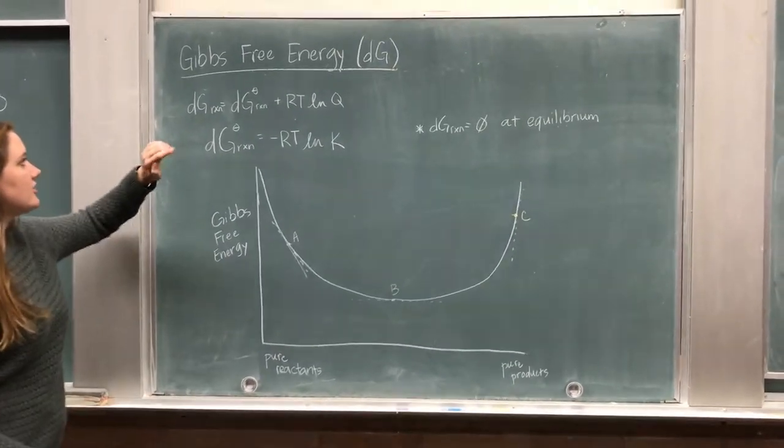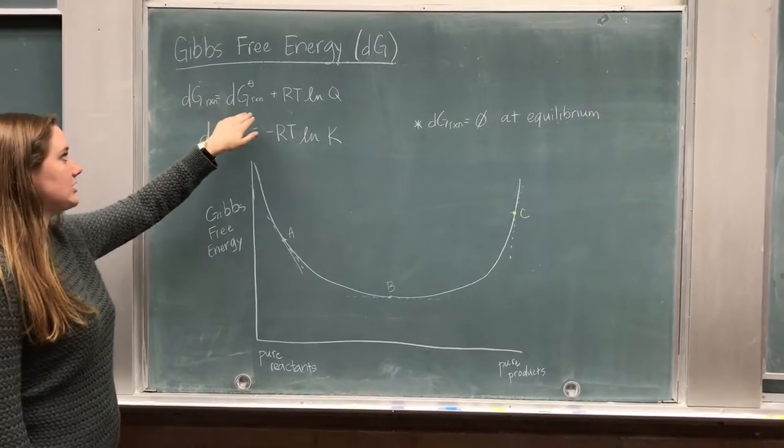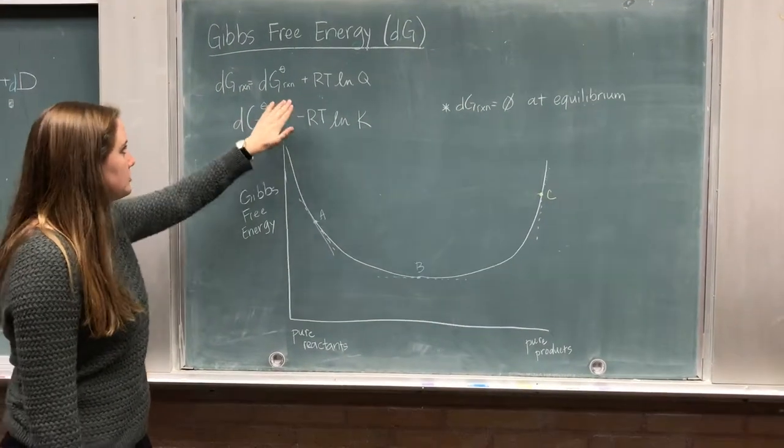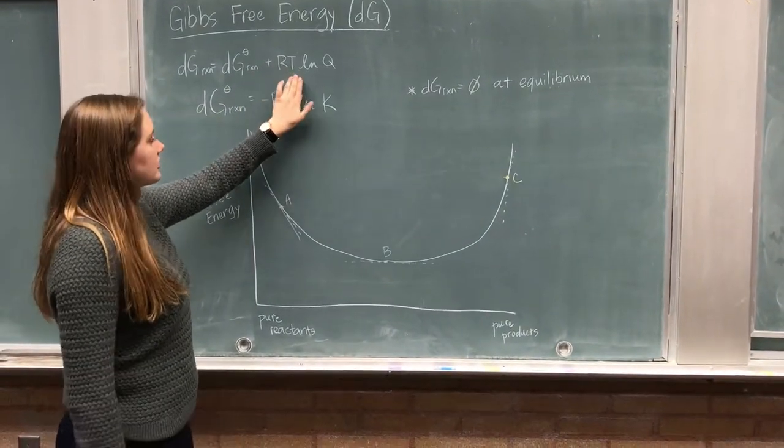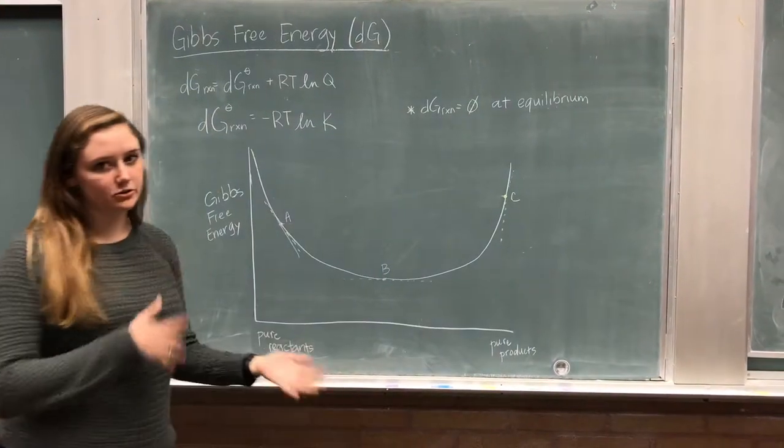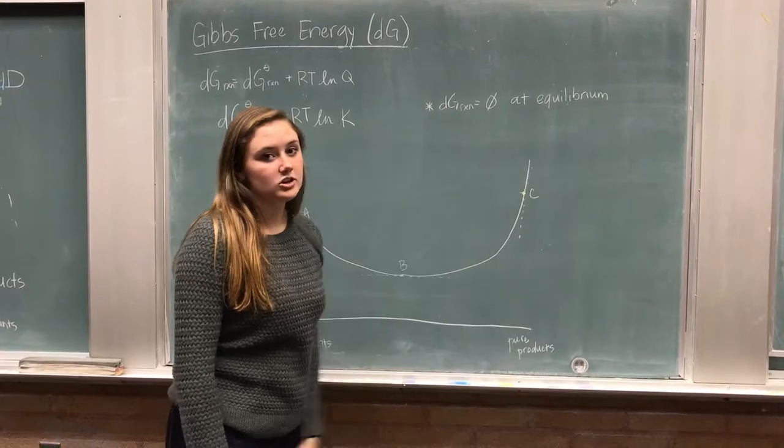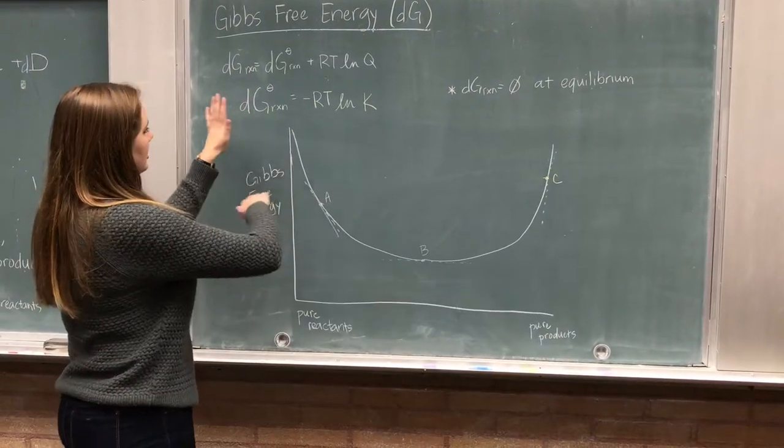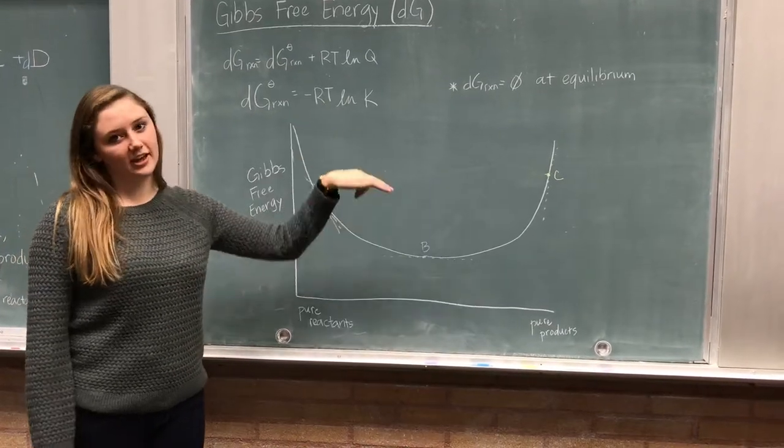So we have this equation. The delta G of our reaction is equal to our delta G standard of our reaction, which we can find in the back of our books if we remember, plus our constant times temperature in Kelvin times our ln of Q. However, at equilibrium, something special kind of happens. And our delta G equals zero at equilibrium. So we're able to change this equation around so that our delta G reaction equals our negative RT ln of K.